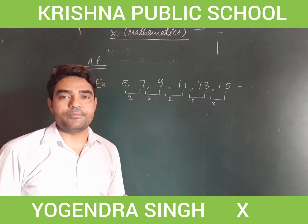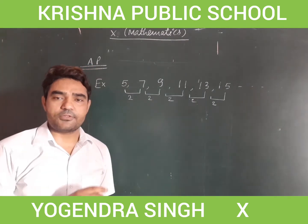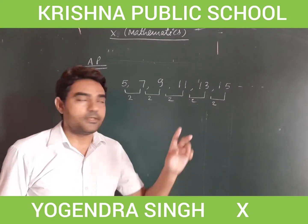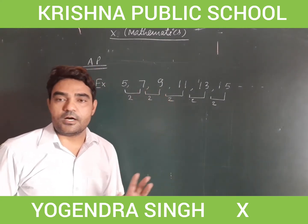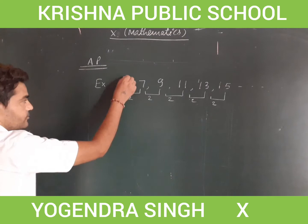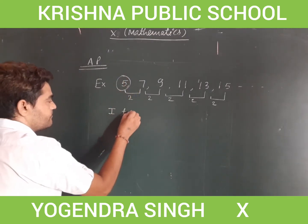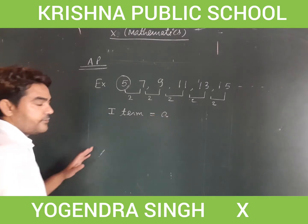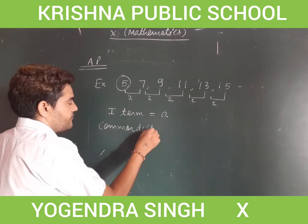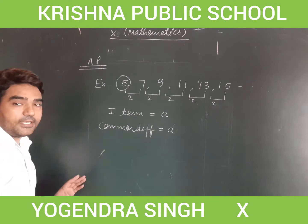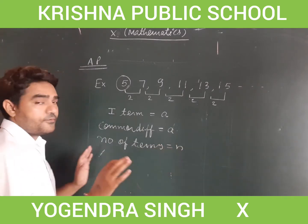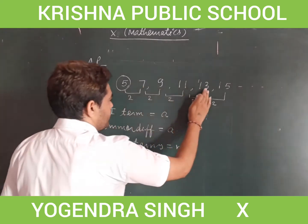In an AP, the common difference remains the same — it can be negative, a fraction, or any number, as long as the common difference is consistent. The first term is denoted as 'a', the common difference is denoted as 'd', and the number of terms is denoted as 'n' — for example, 1, 2, 3, 4, 5, 6, 7 and so on.